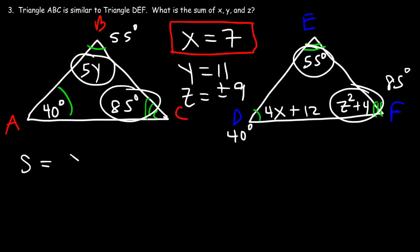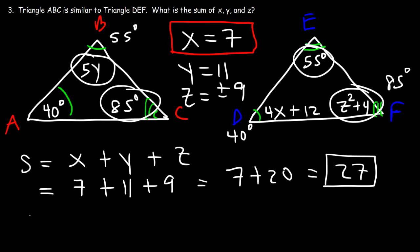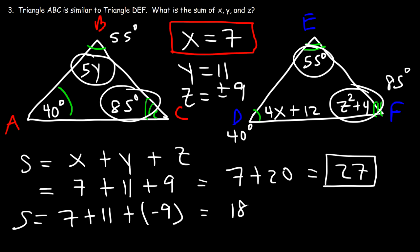The sum x plus y plus z has two possible answers. If z is positive 9: 7 plus 11 plus 9 equals 27. If z is negative 9: 7 plus 11 minus 9 equals 9. So the sum of x, y, and z can be either 27 or 9 — both answers are acceptable.